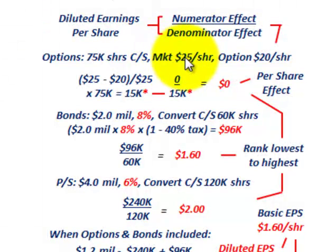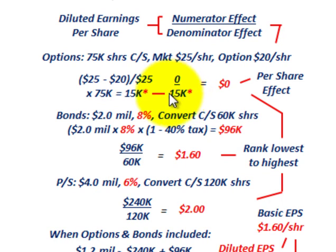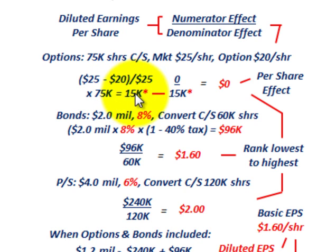Looking at the options: we have 75,000 shares, a market price of $25 per share, and an option price of $20 per share. The numerator effect is zero — options don't affect net income. For the denominator, using the formula: ($25 − $20) ÷ $25 × 75,000 = 15,000 potential shares. So the per-share effect for options is zero.